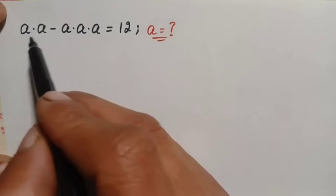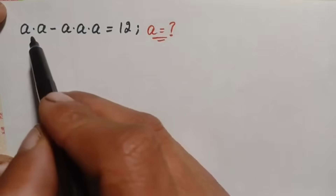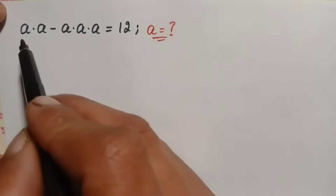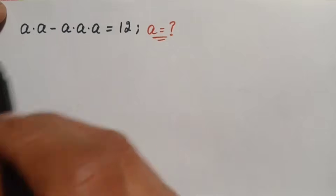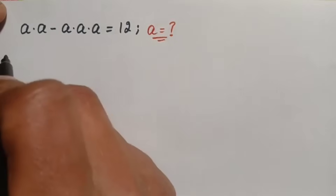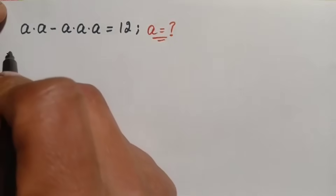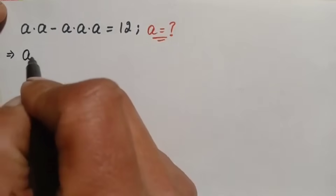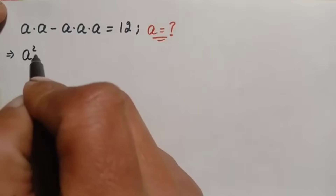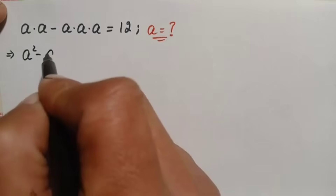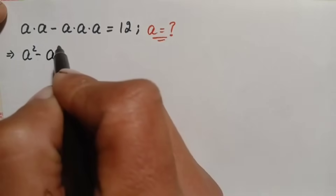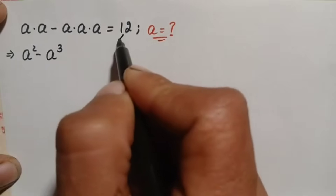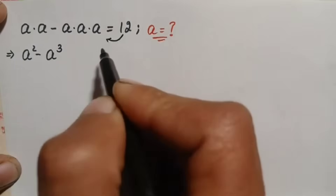Looking at the left hand side, the first term is multiplied two times and the second term is multiplied three times. Since the base is the same, we add the powers. So this becomes a squared minus a cubed.